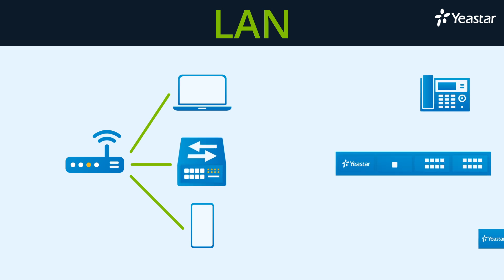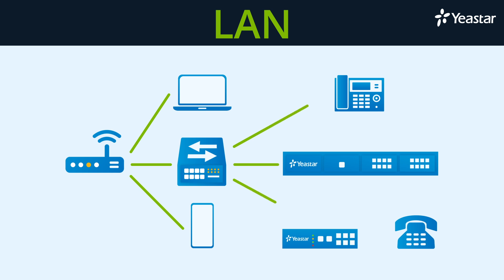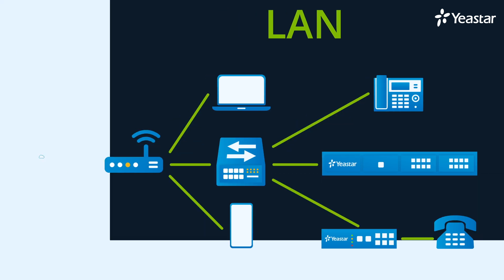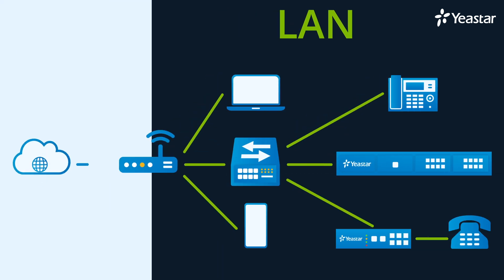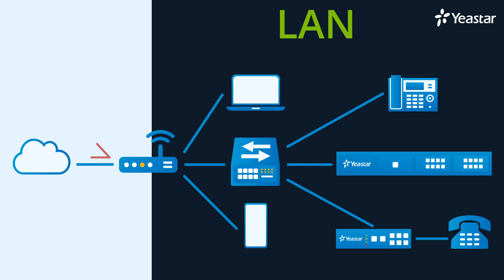Usually, switches will be deployed to connect more devices to the router. If we connect broadband to the router, all the devices will be able to access the internet. A router is more like the main port that controls the traffic to the outside world.